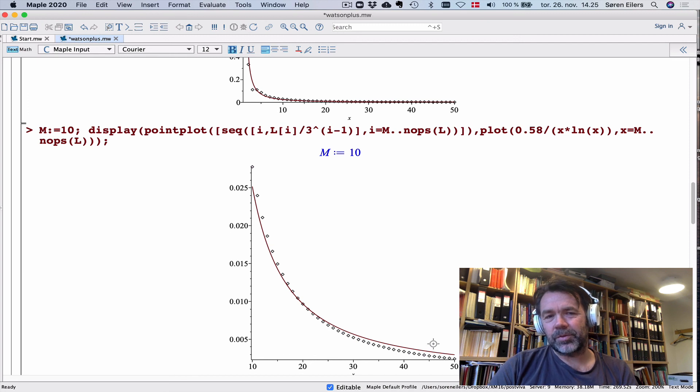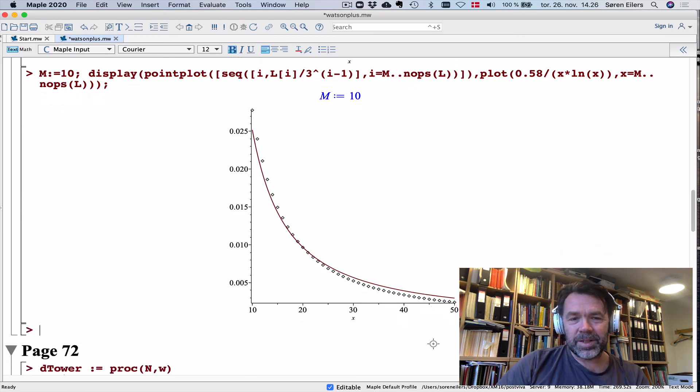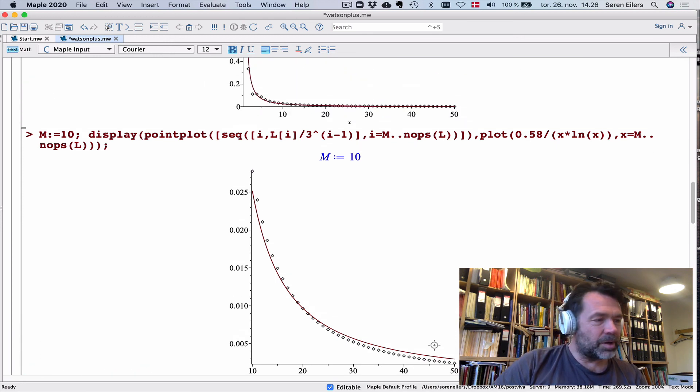It might be that the choice of the constant 0.58 was sort of arbitrary, that would move the red graph up and down. But there's no way I can make this work, because the curvature of the graphs simply do not match up. You can see there's something wrong about the conjecture of Watson here.